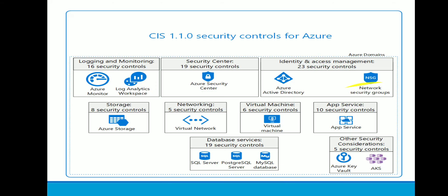So let's start with the presentation. As you can see, CIS 1.1.0 security controls for Azure — it is pretty much readable. I've put it together in a format that you can easily grasp the number of security controls in each area. For logging and monitoring there are 16 security controls, for database services there are 19, and for app service there are 10.